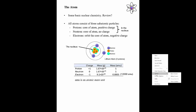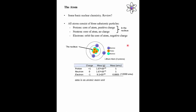The nucleus consists of protons, which have a positive charge, and neutrons, which have no charge at all. Protons and neutrons have an atomic mass unit of one, while electrons are about one-two-thousandth the weight of a proton or neutron. Electrons have a charge of negative one. Atoms are always charge neutral, so the number of protons equals the number of electrons — in this case, three protons and three electrons for lithium, which is element number three.